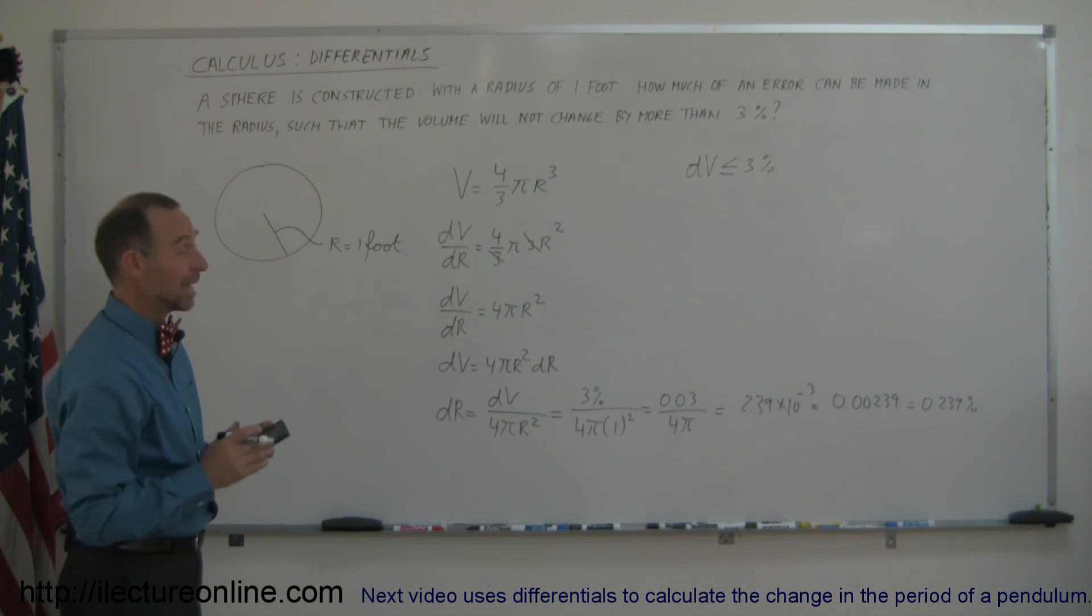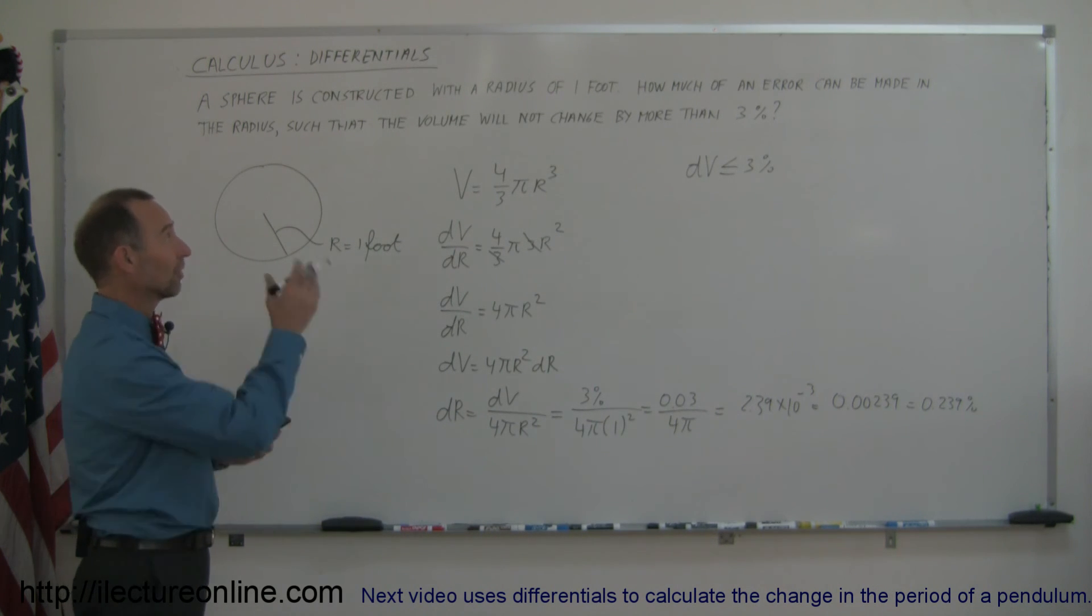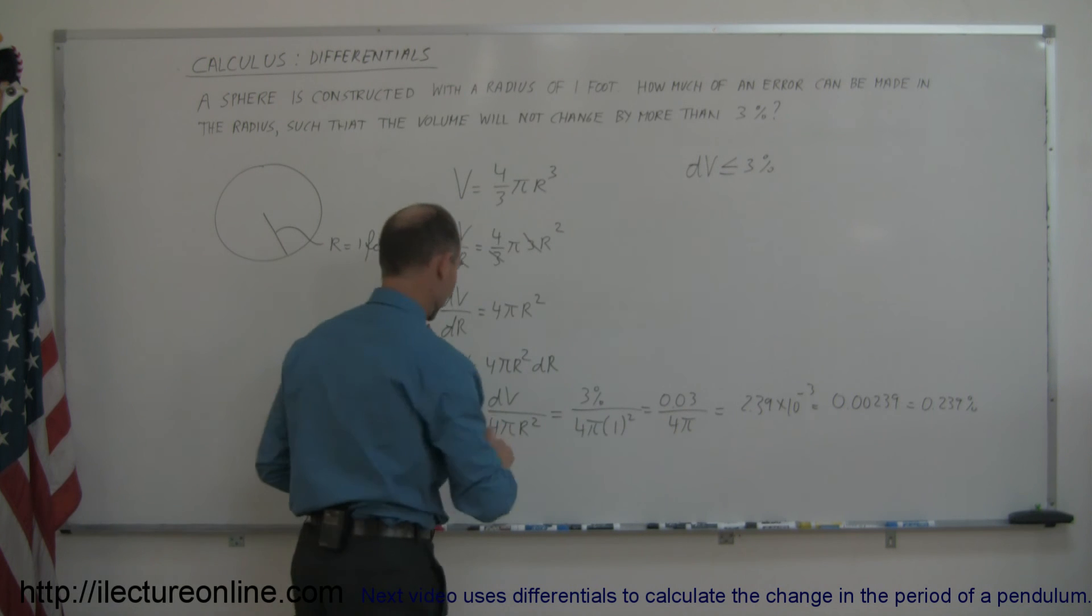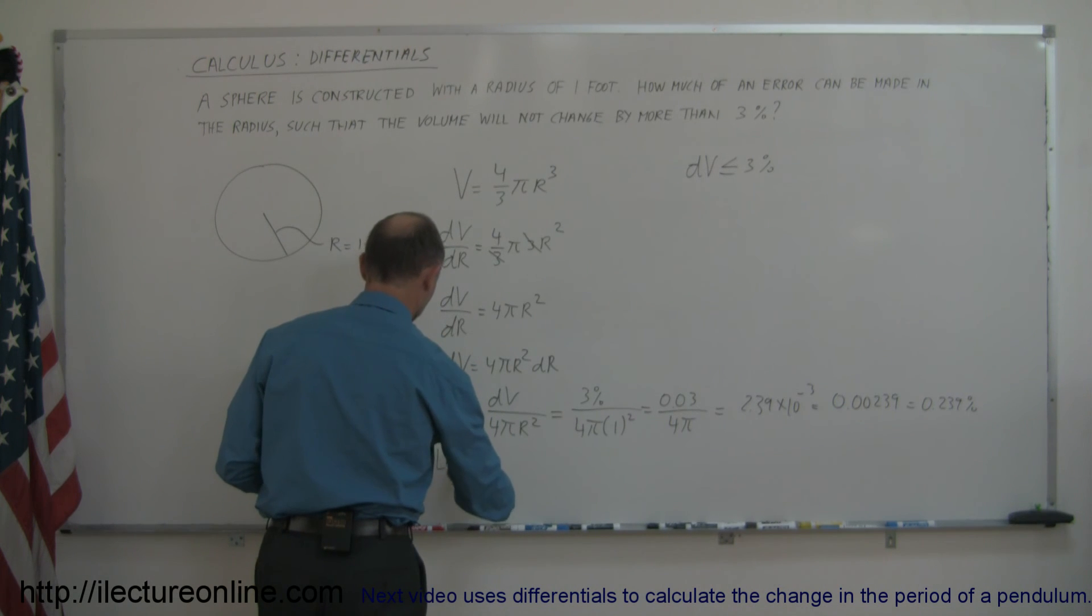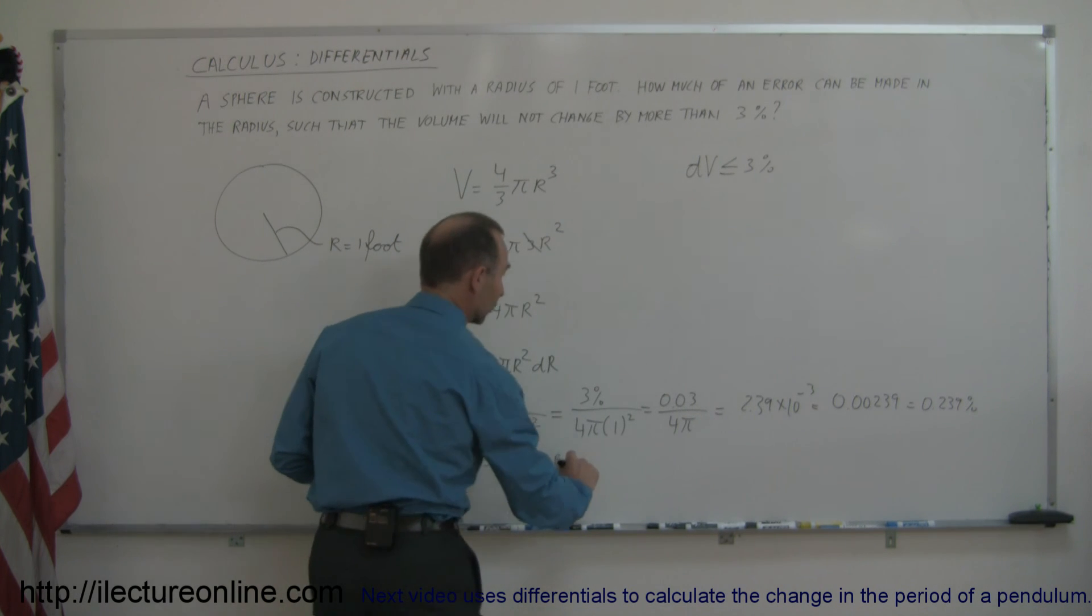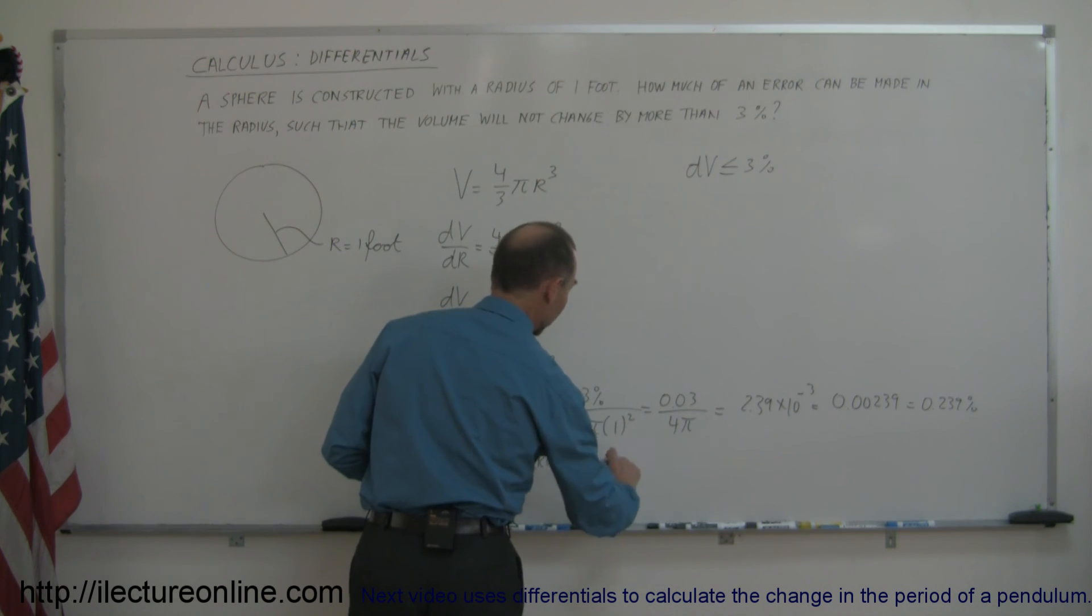So the change in r cannot be any more than 0.239 percent, and of course if that is a one foot radius that would be no bigger than 0.00239 feet. So the largest error is equal to 0.00239 feet.